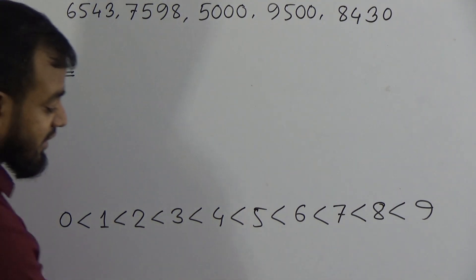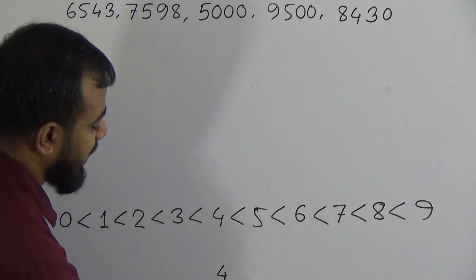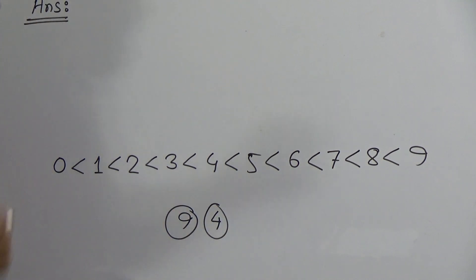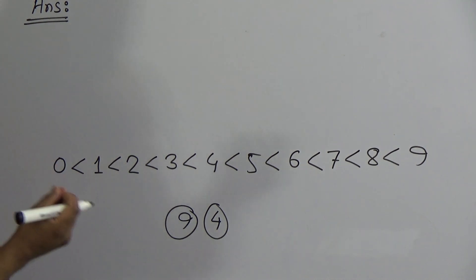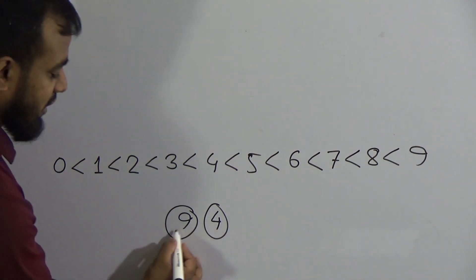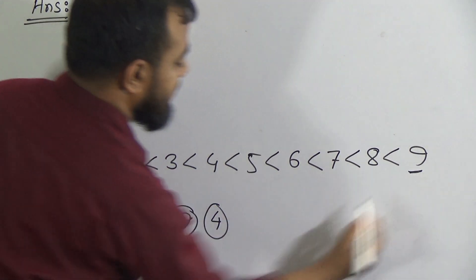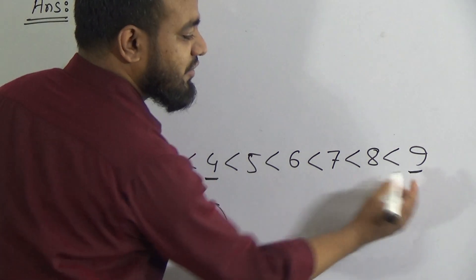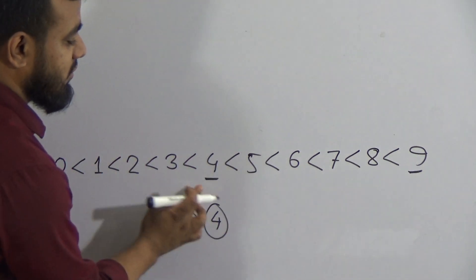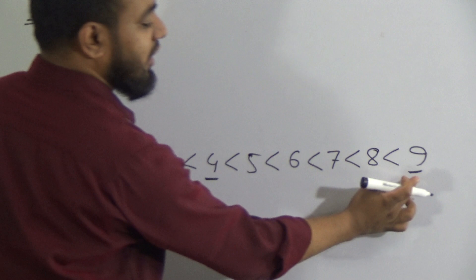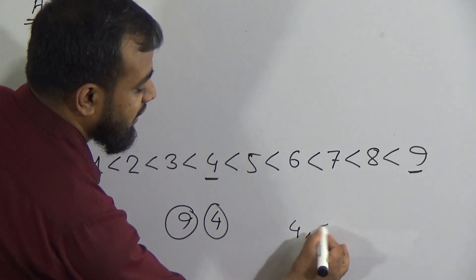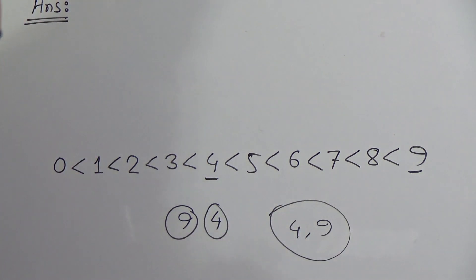Suppose there are 2 numbers given which are single digit — suppose 4 and 9 are given. We need to arrange these 2 numbers in ascending order. Ascending order means from smaller to greater. So between these 2 numbers, 4 is smaller than 9 — this is very clear from the chart. So we need to arrange like this: 4 first, then 9. It is called arranging in ascending order.